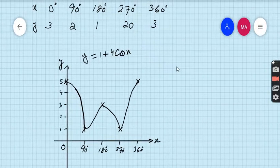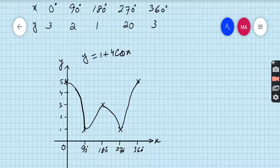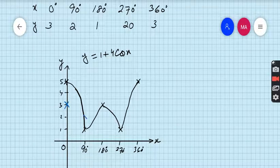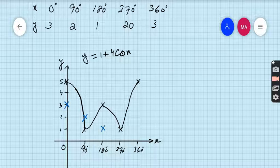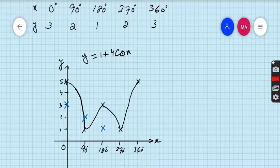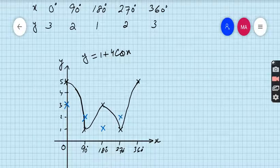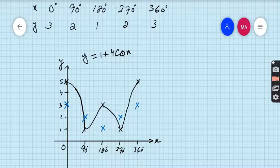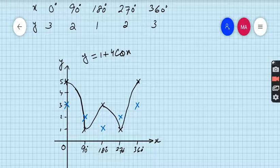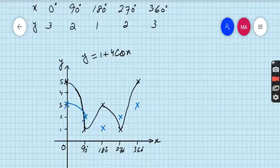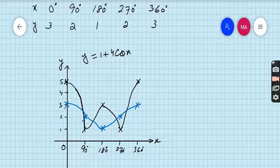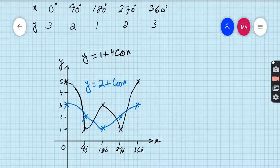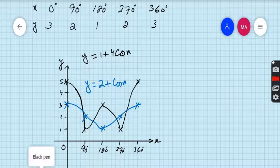Now we have to plot the graph of y equals 2 plus cos x. When x is 0, then y is 3, this is the first point. When x is 90, then y is 2, this is the second point. When x is 180, y is 1. When x is 270, y is 2. And when x is 360, then y is 3. Plot these points. So this is the graph of y equals 2 plus cos x.